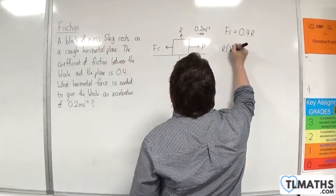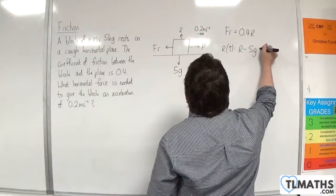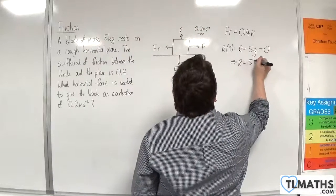If we resolve vertically, taking upwards as positive, we would have r take away 5g is going to be equal to 0. So r would be 5g.